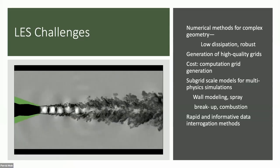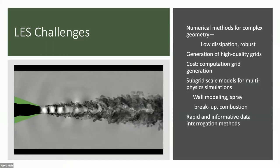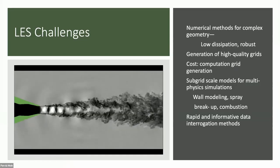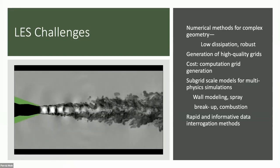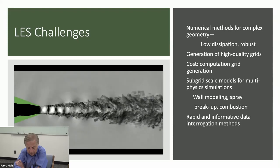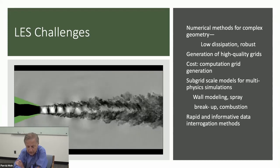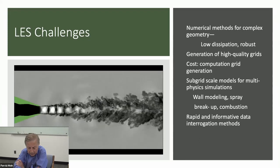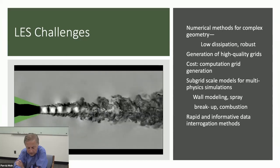What are the challenges in LES? First, as we move to complex configurations, we need numerical methods that can handle complex geometry. These methods have to be low-dissipation and robust — low-dissipation because we don't want to interfere with the physical turbulent dissipation, and when you reduce numerical dissipation, robustness becomes an issue best handled by guaranteeing the conservation principles of fluid mechanics. Also, generation of high-quality grids has been a pacing item, as typical RANS-type grids are not suitable for capturing turbulence fluctuations and pressure fluctuations in a turbulent flow. Considerable progress has been made in this area.